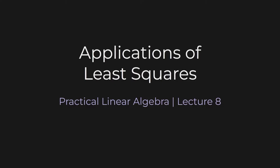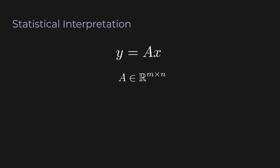Let's look at some applications of least squares. This is where you finally start to see how powerful and versatile least squares is. We have our equation here: y equals Ax. A is a matrix with m rows and n columns, and x and y are vectors that make this matrix equation make sense.